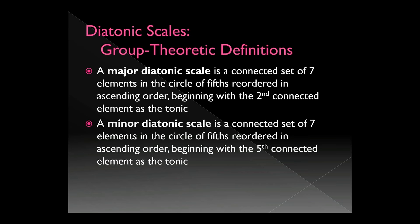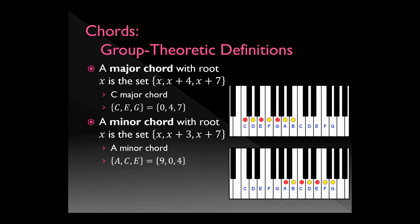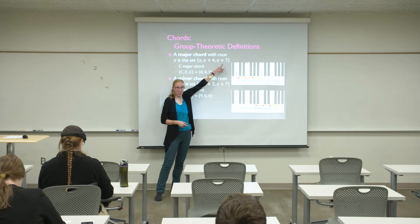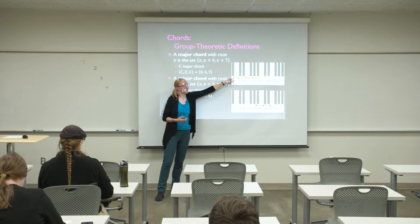A minor diatonic scale: you take the same set of elements, reorder them, but start with the sixth element instead of the second. For group-theoretic definitions of chords: a major chord with root X is the set {X, X+4, X+7} — just counting how many keys are in between.